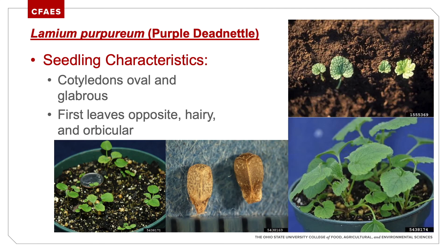Purple dead nettle seedling characteristics: cotyledons are oval and glabrous; first leaves are opposite, hairy, and orbicular.